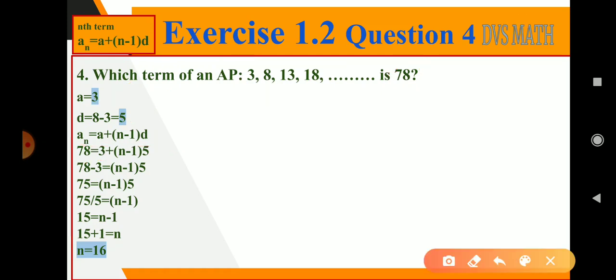So if we take plus 3 to the LHS, it becomes minus 3. So n minus 1, 5 as it is. 78 minus 3 is 75. n minus 1 into 5 remains. Again, if you take 5 to the here, it is multiplied; when we take to the LHS it becomes divided. So 75 by 5, we got 15.